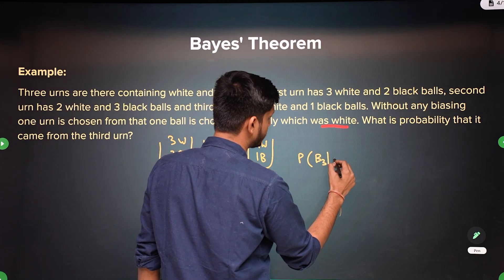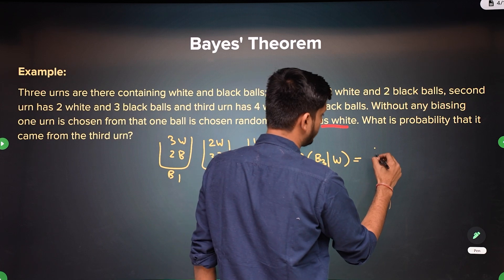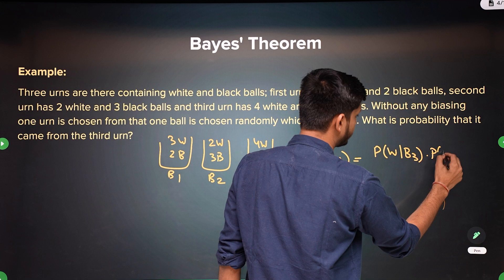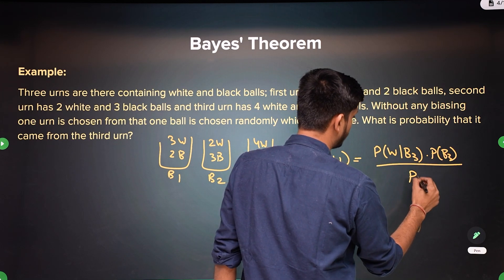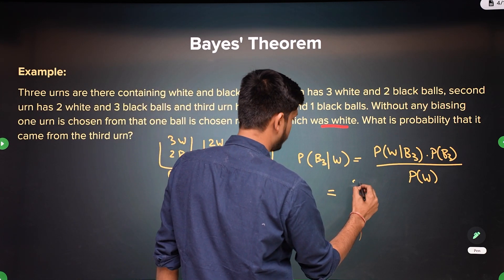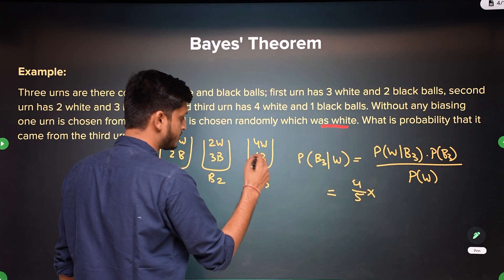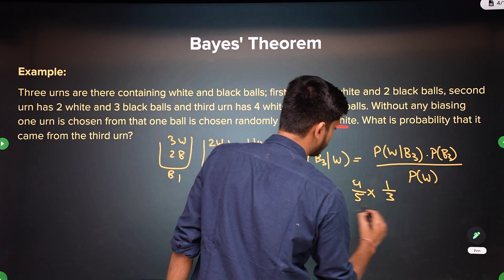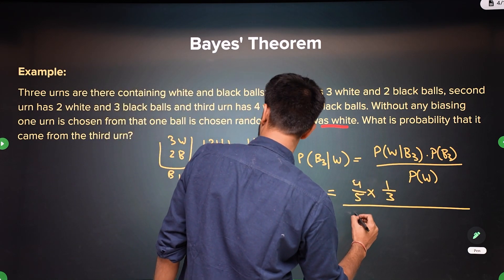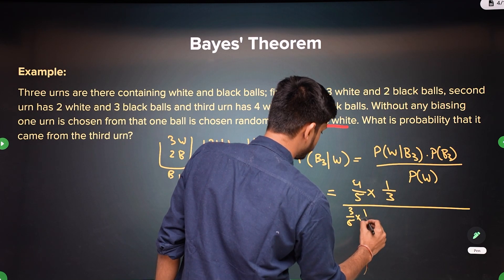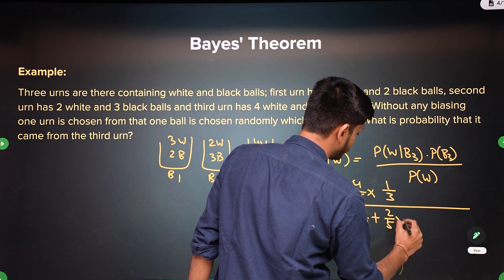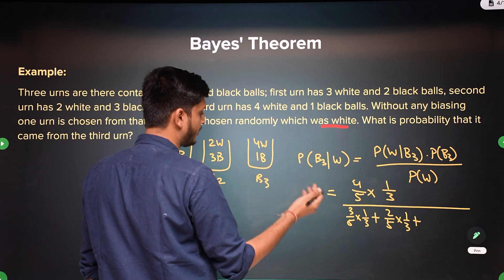You need to calculate the probability of the third bag given the chosen ball is white. It is the probability of getting a white ball given the third bag is chosen, times the probability of the third bag being chosen, upon the total probability of getting a white ball. So it is 4 by 5 times 1 by 3, upon — the contribution of the first bag is 3 by 5 into 1 by 3, plus from the second bag 2 by 5 into 1 by 3, and for the third bag 4 by 5 into 1 by 3.